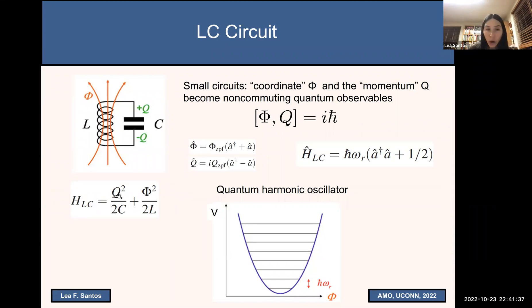So the Hamiltonian that describes this system is given here. We can see the charge as momentum. We can see the flux as the coordinate. And if this circuit is very small, these two variables will no longer commute. So now we have a quantum circuit. We can write this Hamiltonian, the quantum counterpart of this Hamiltonian like this. We have a quantum harmonic oscillator.